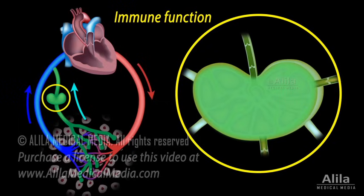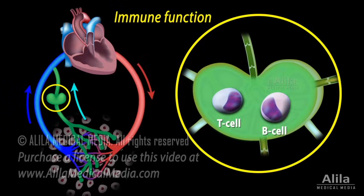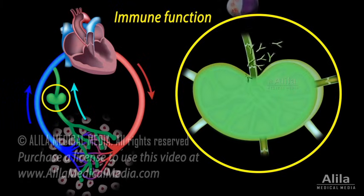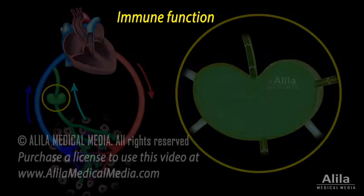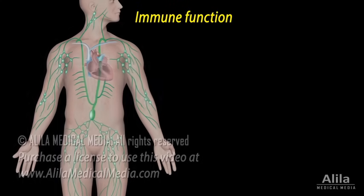Lymph nodes also contain lymphocytes — T-cells and B-cells — which are involved in adaptive immune response, a process that produces activated lymphocytes and antibodies specific to the invading pathogen. These are then carried by the lymph to the bloodstream to be distributed wherever they are needed.